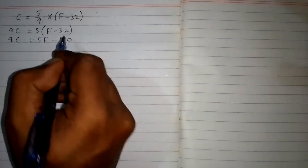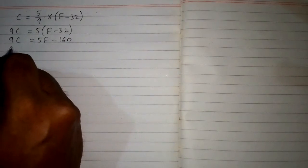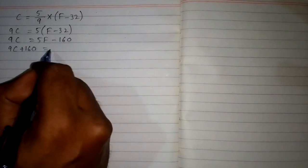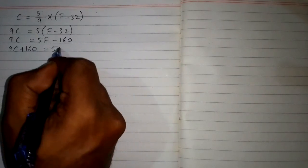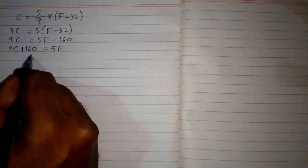Now we can take this minus 160 to this side, so it will become plus 160. We have 9C + 160 = 5F. Then we can write 5F = 9C + 160.